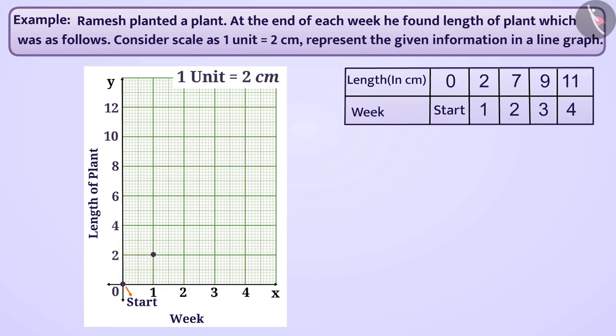Similarly, the length of plant in week 2 is 7 cm. To denote this length, we will mark the point at the intersection of the vertical line of week 2 and the horizontal line of 7 cm. Similarly, we will mark the points for all observations.